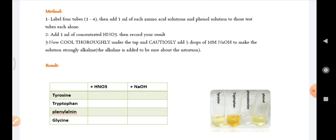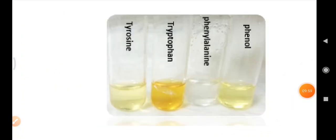So, you should prepare your observation table for this test like this. You can mention your all amino acids, tyrosine, tryptophan, phenylalanine, glycine or the protein samples which contain these types of amino acids. Then, what will you observe by adding nitric acid and what will be observed after adding NaOH solution? This is the color change which will be observed by tyrosine, tryptophan, phenylalanine and phenol.